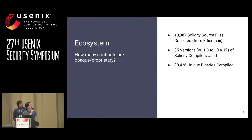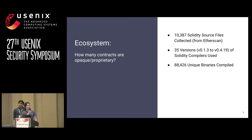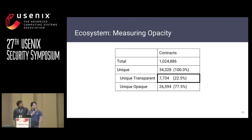The second-level question is how many of these contracts are actually opaque or proprietary. To answer that, we scraped Etherscan and collected more than 10,000 Solidity source files. Using 35 different versions of Solidity compilers, which are the major compiler versions available, we ended up compiling 88,000 unique binaries. Taking the intersection of these compiled binaries with the ones found on the blockchain, we ended up matching 7,700 of the unique contracts, which leaves the majority — 77% of the contracts — without source code available.